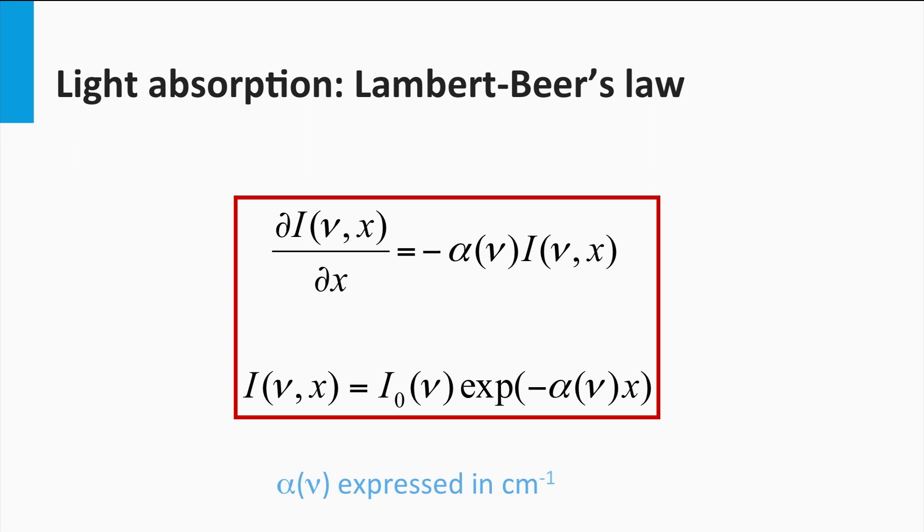Lambert-Beer's law shows that the light intensity is decreasing exponentially in the x-direction of the absorbing medium. It also means that at the side at which the light is entering the film, more light is absorbed in reference to the back side. The total light intensity absorbed in the material is equal to the light intensity entering the absorber layer minus the intensity transmitted through the absorber layer.